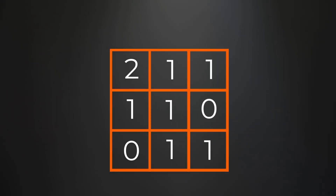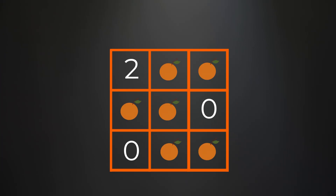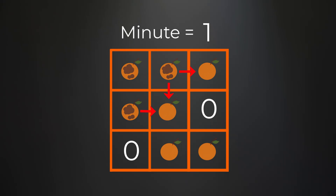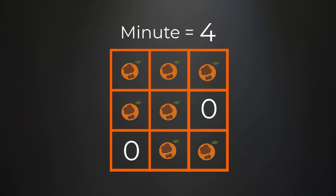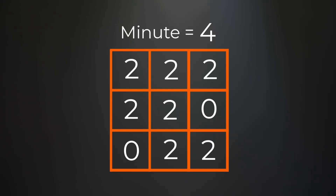Every single minute, any fresh orange that is horizontal or vertical to a rotten orange also becomes rotten. We must return the minimum number of minutes until there are no fresh oranges left. If it's impossible to make all of the fresh oranges turn rotten, we return negative one. Another way to phrase this: every minute a one that is a neighbor to a two changes to a two — return the minimum number of minutes until there are no ones left in the matrix.